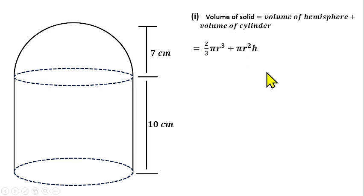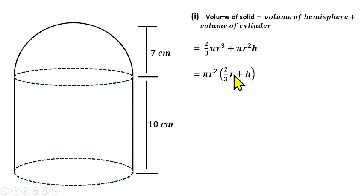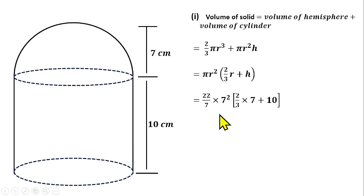So the volume of the hemisphere is 2/3 πr³ and the volume of the cylinder is πr²h. When you add them together and factorize, πr² is common, giving us: πr² × (2/3 r + h). Now the radius r is 7 cm, which is the radius of both the hemisphere and the circular base of the cylinder.